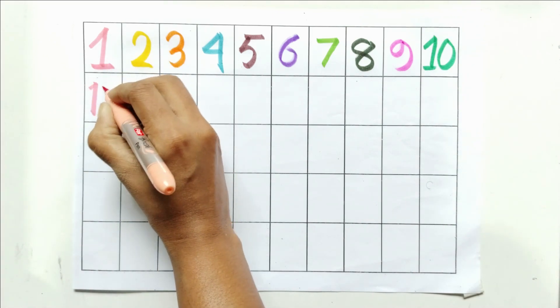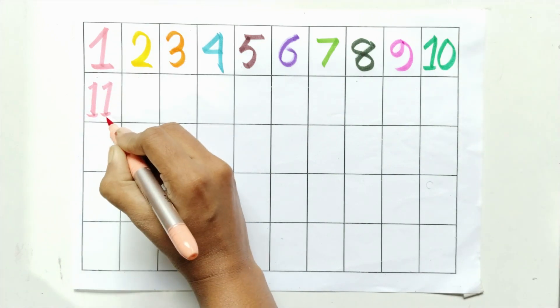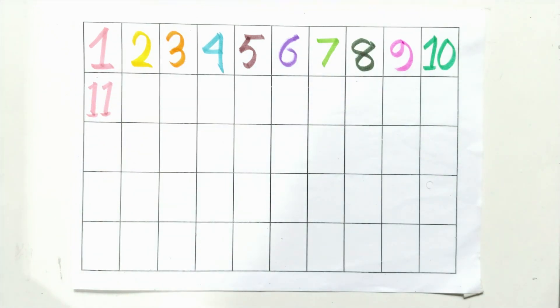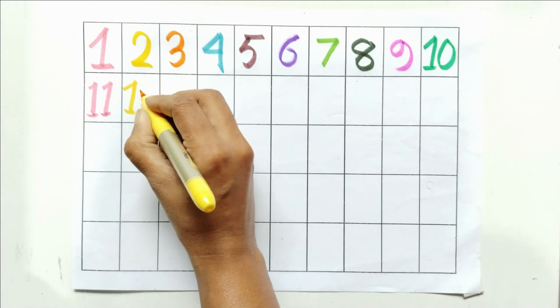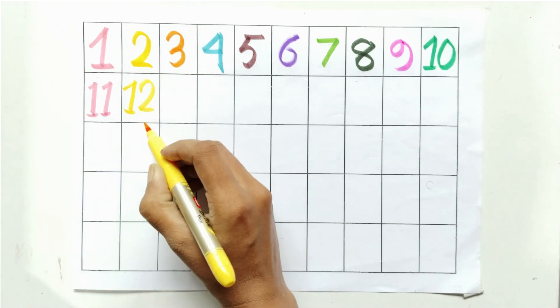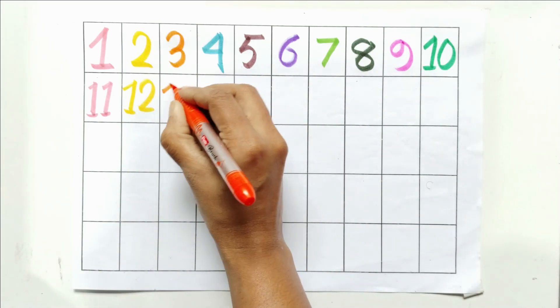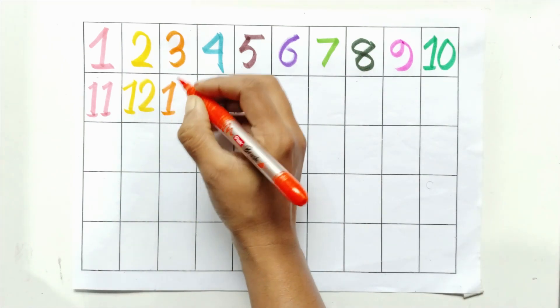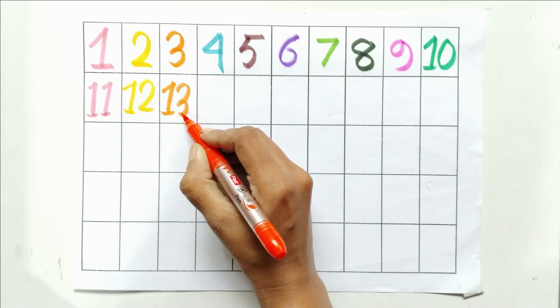One and one, eleven. One and two, twelve. One and three, thirteen.